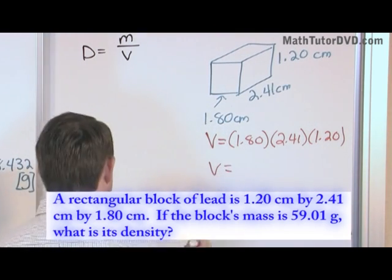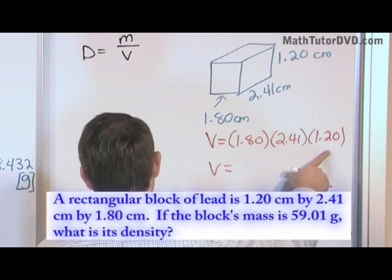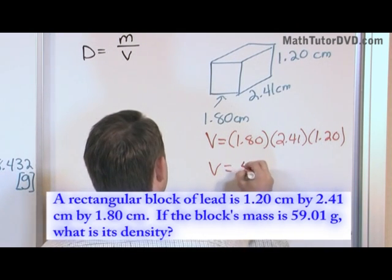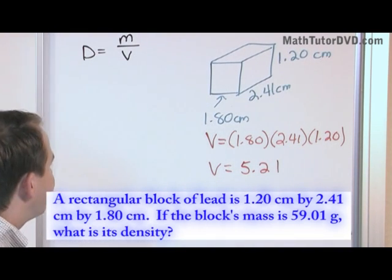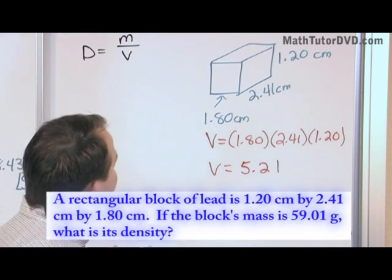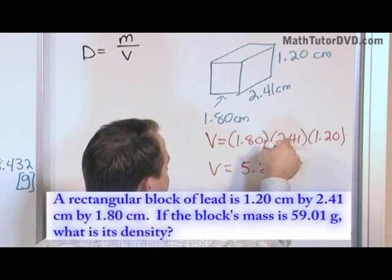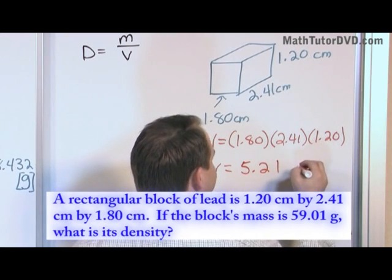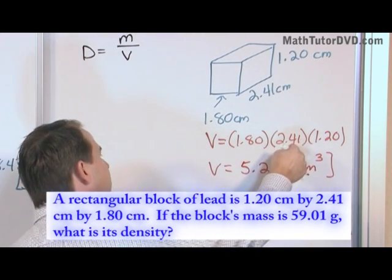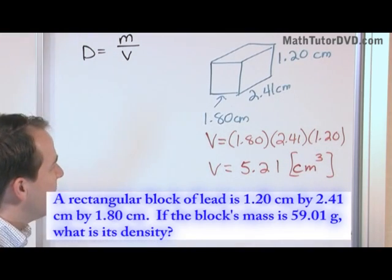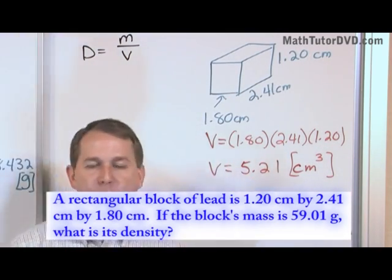When you multiply 1.8 times 2.41 times 1.2, you get 5.21. But don't leave it without a unit — you're multiplying centimeters times centimeters times centimeters, so you get centimeters cubed, or cubic centimeters. The volume of this block is 5.21 cubic centimeters.